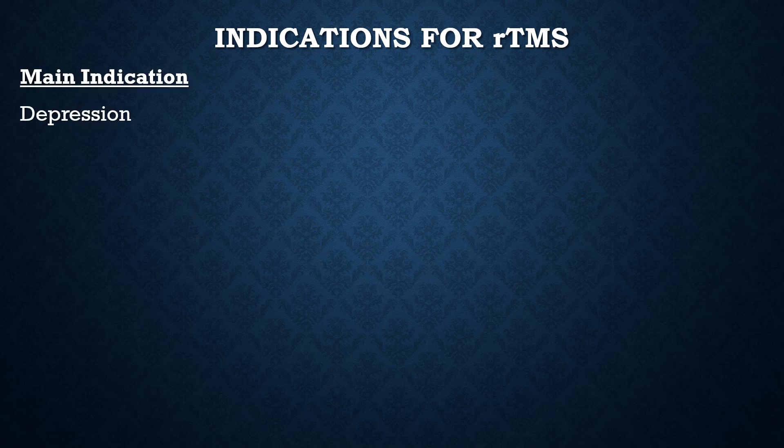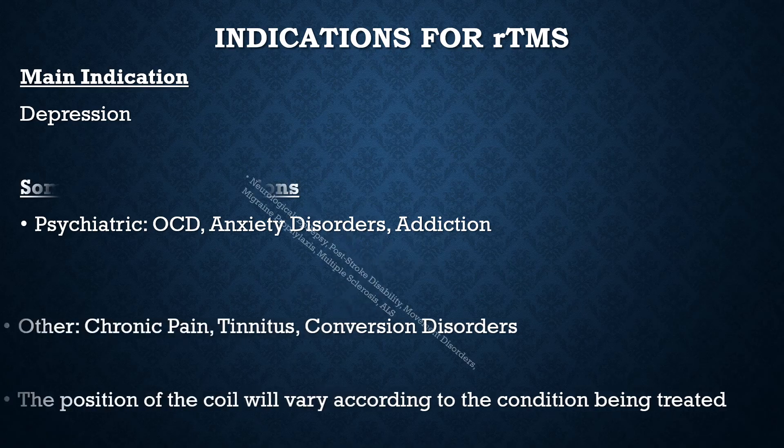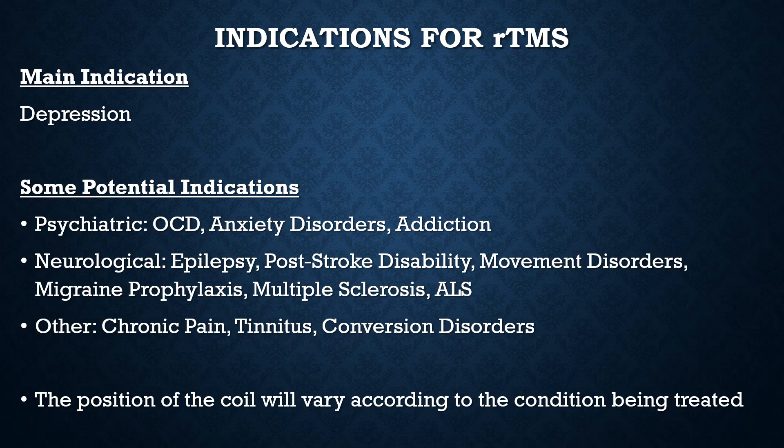The main indication for rTMS is depression. There are many other conditions for which rTMS has been tried, including a range of psychiatric, neurological, and other disorders. The position of the coil varies according to the condition being treated — for depression the position is the left dorsolateral prefrontal cortex, but for different conditions the position will be different.